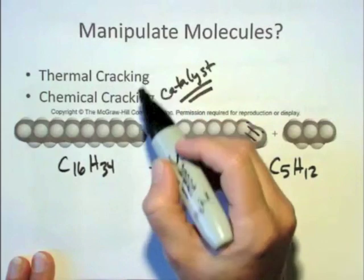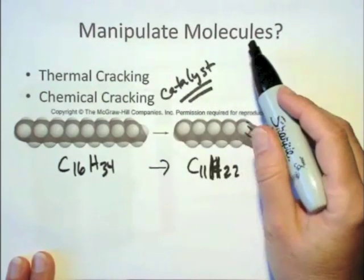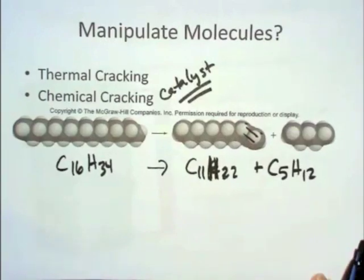And so the thermal cracking is when you use heat. Chemical cracking is when you do it using a catalyst. So it's a big business. Different companies own patents for the different catalysts to try to make their gasoline cheaper so they can make more money.